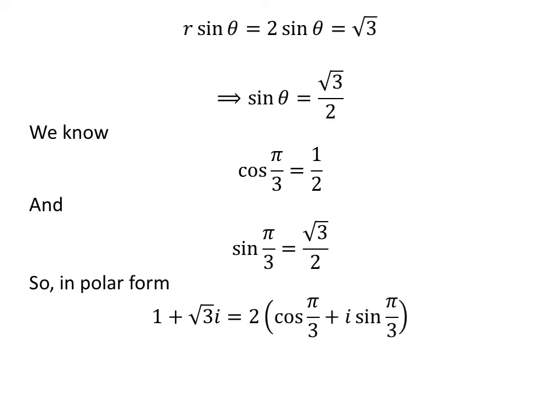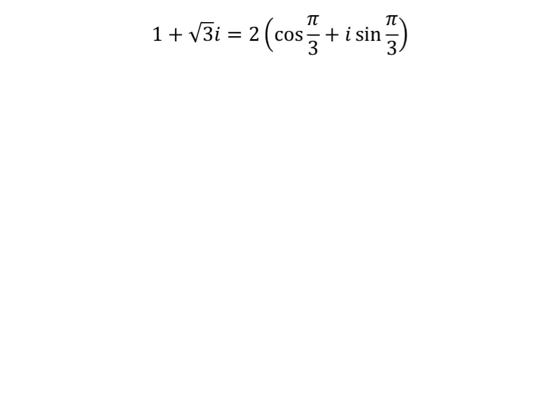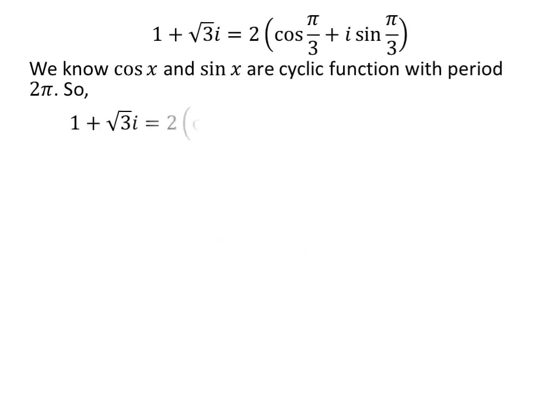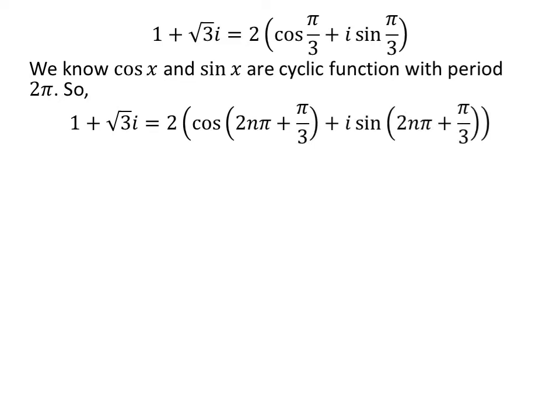So the polar form of the complex number 1 plus square root of 3 times iota is 2 times cosine of pi upon 3 plus iota times sine of pi upon 3. Since cosine and sine are cyclic functions with period 2 pi, we write: 1 plus square root of 3 times iota is equal to 2 times cosine of 2n pi plus pi upon 3 plus iota times sine of 2n pi plus pi upon 3, where n is an integer.